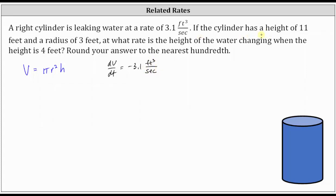Because we're concerned about the water, we know the radius is equal to three feet, which will not change. We're concerned about the rate at which the height is changing when the height of the water is four feet, and therefore h is equal to four feet. Notice how we're not using the height of 11 feet, because that's the height of the cylinder, and we're concerned about the change in the height of the water.